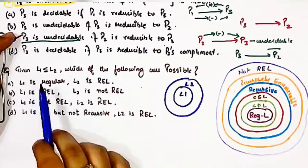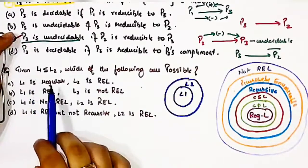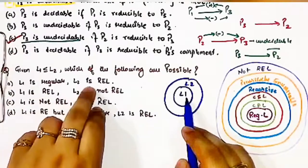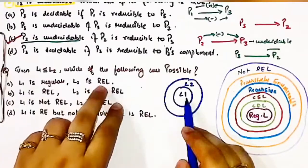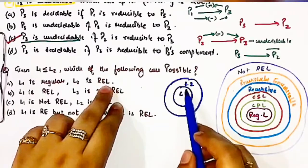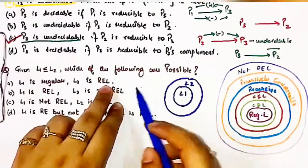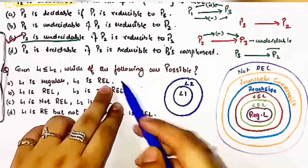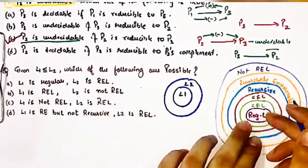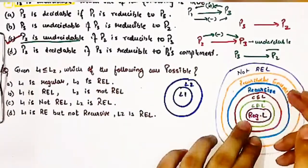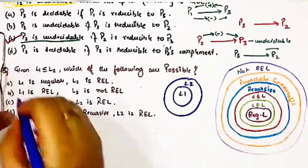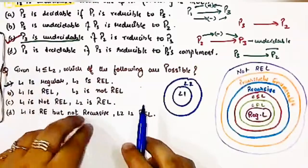In option A, it is given that if L1 is regular, then L2 is a recursively enumerable language, considering the fact that L1 is reducible to L2. This is a valid possibility because if L1 is a regular language, then L2, being a bigger set, can be recursively enumerable. Hence this is a correct or possible option.